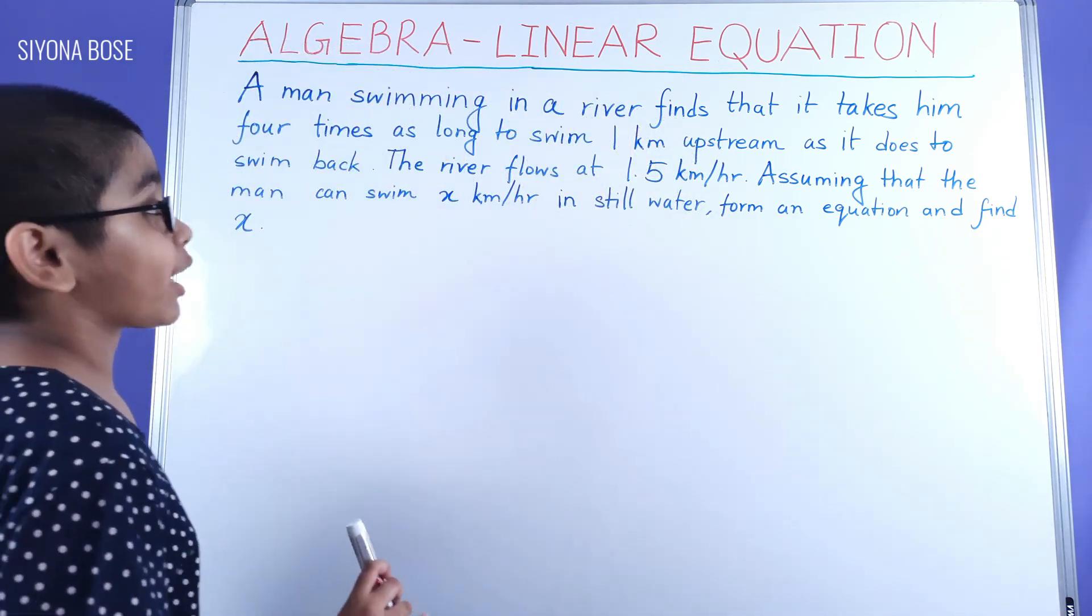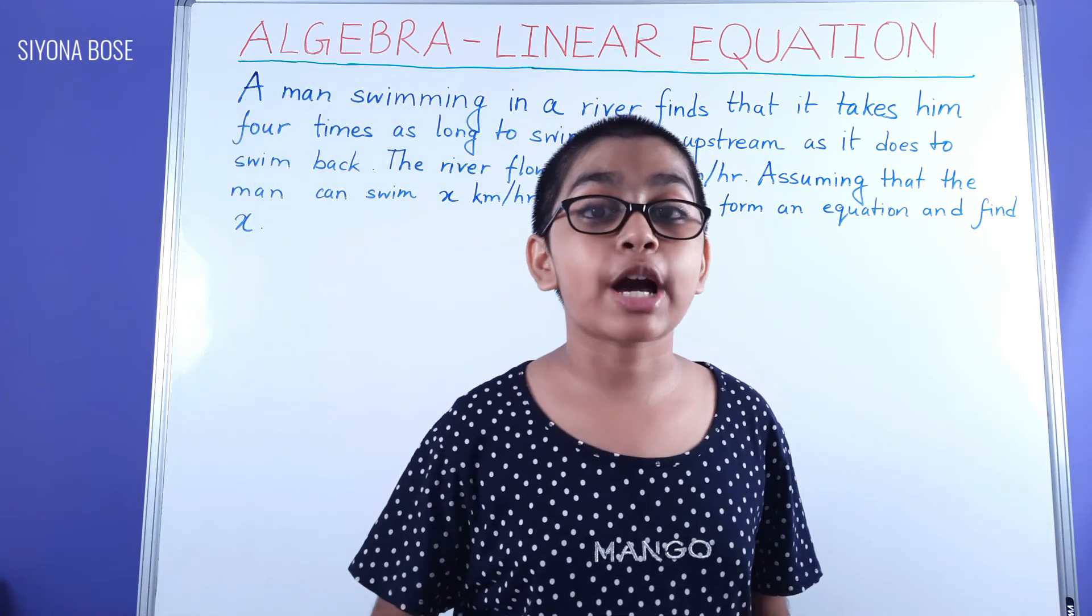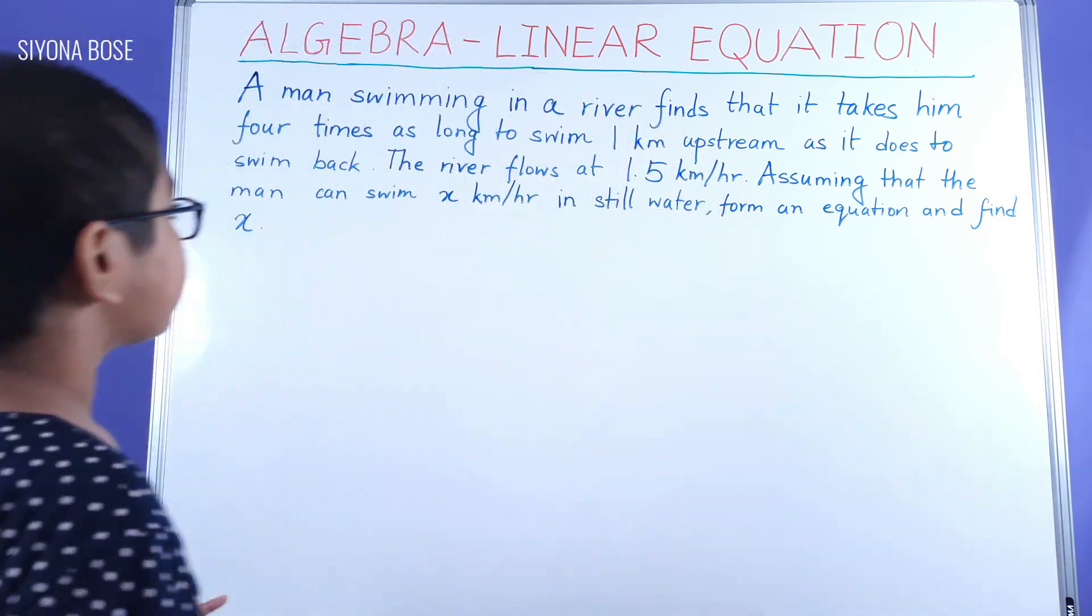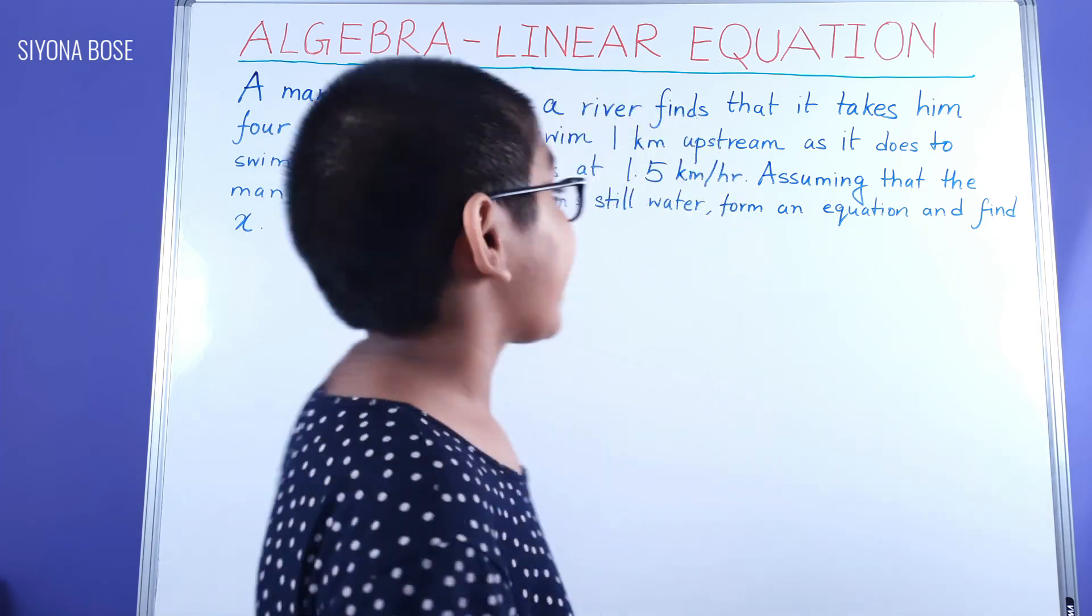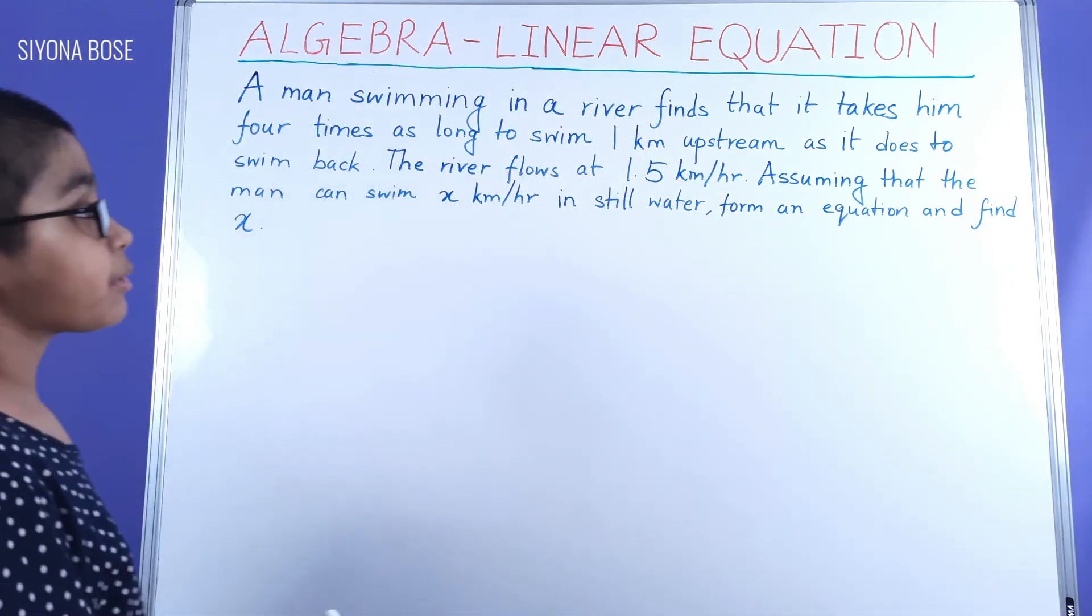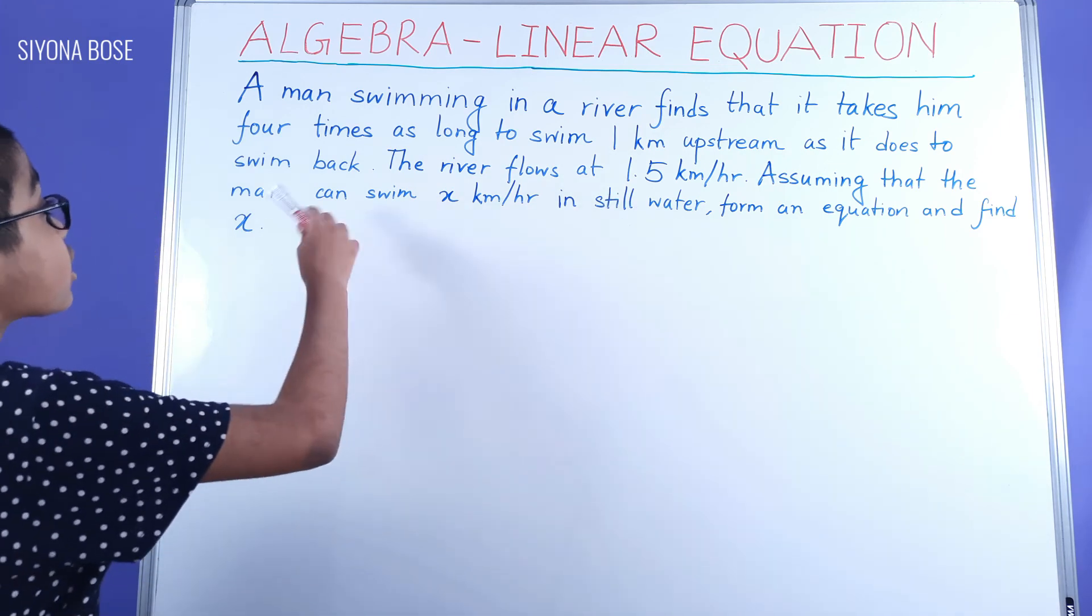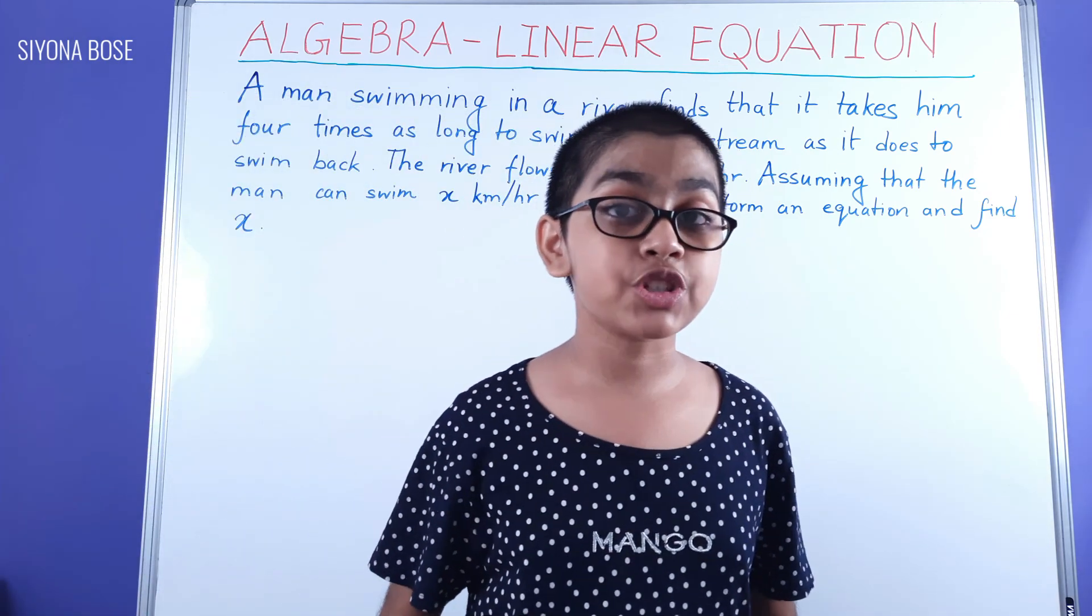The river has its own current that has a speed of 1.5 kilometers per hour. Upstream means the current is going against the man, so the man's speed is going to decrease. And in case of downstream, which is when he's swimming back...